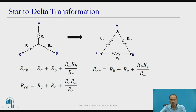How do we convert? Star to delta transformation. If a star connection is given with terminals A, B, C and resistors RA, RB, and RC connected in star, we need to convert this into a delta connection. In the delta connection between terminals A, B, C, we need to find the values of RAB, RBC, and RCA using RA, RB, and RC.